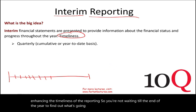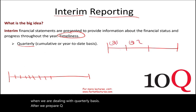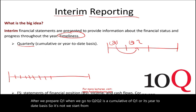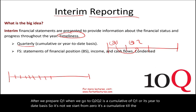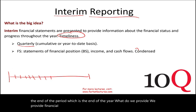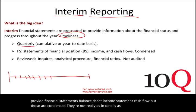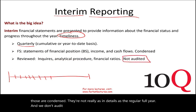When dealing with quarterly basis, after we prepare Q1, when we go to Q2, Q2 is a cumulative of Q1 — it's year-to-date basis. We don't start from zero; it's cumulative till the end of the period, which is the end of the year. What do we provide? We provide financial statements — balance sheet, income statement, cash flow — but those are condensed, not as detailed as the regular full year. And we don't audit quarterly reporting; we review them.